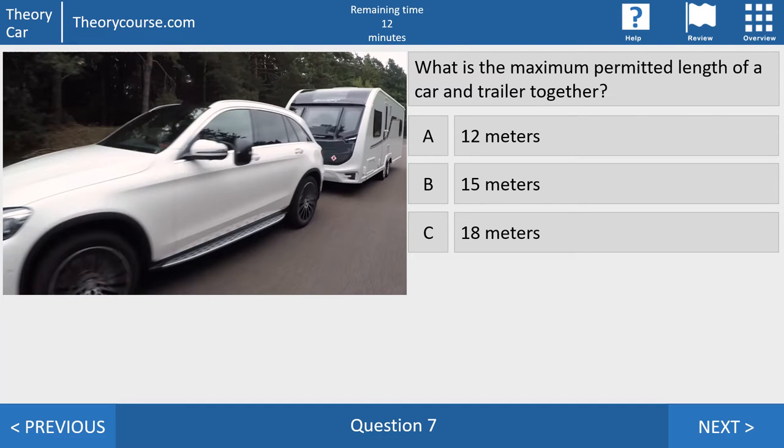Question seven. What is the maximum permitted length of a car and a trailer together? Is it 12 meters, 15 meters or 18 meters? The right answer. Answer C. 18 meters. The maximum length of a car is 12 meters. The maximum length of a trailer is 12 meters. And in the Dutch law, 12 plus 12 is not 24 but 18 meters.